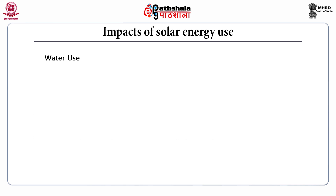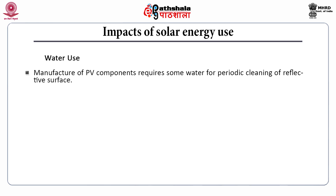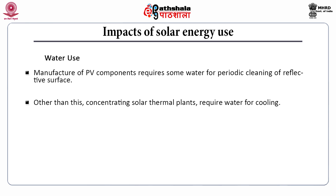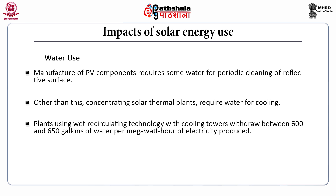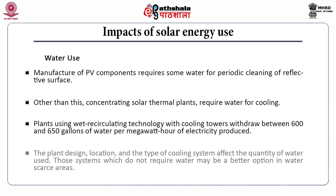The second impact is on water use. The manufacturing of PV components requires some water for periodic cleaning of reflective surfaces. Concentrating solar thermal plants require water for cooling. Plants using wet recirculating technology with cooling towers withdraw between 600 and 650 gallons of water per megawatt hour of electricity produced. The plant design, location and types of cooling system affect the quantity of water used. Systems that do not require water may be a better option in water-scarce areas.